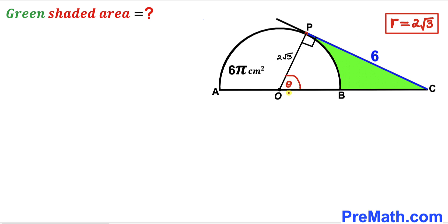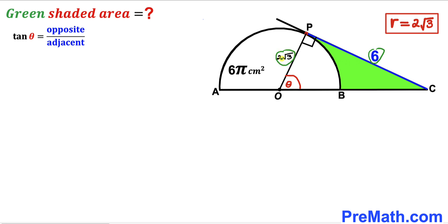To find angle theta, we recall the trig ratio: tan(θ) = opposite/adjacent. In our triangle, the opposite side is 6 cm and the adjacent side is 2√3 cm, so tan(θ) = 6 / (2√3).